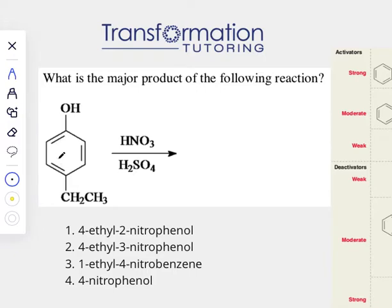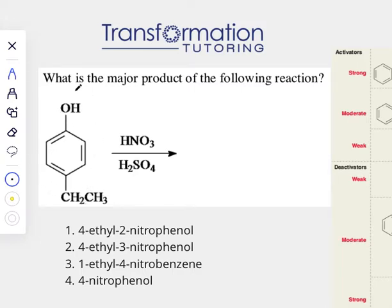Now, where would our NO2 be added if we have two substituents on the benzene ring already? We have this alcohol group and we also have this ethyl group. So how would we know where the third substituent will attach? In order to do that, we will have to look at the chart and identify what kind of groups are on the benzene ring already.